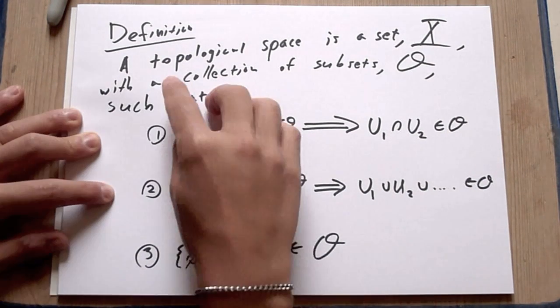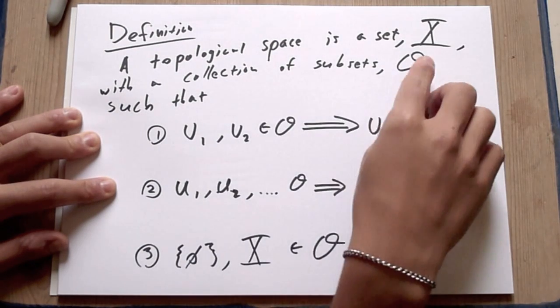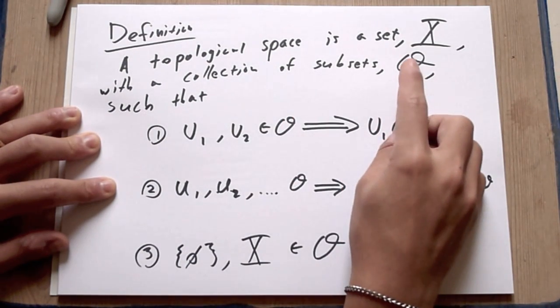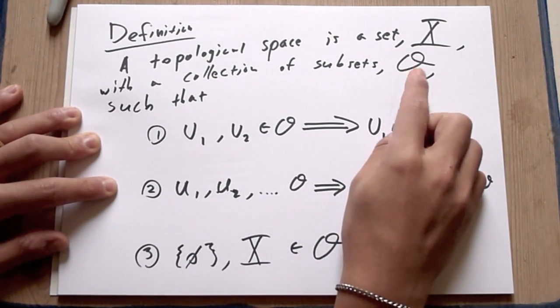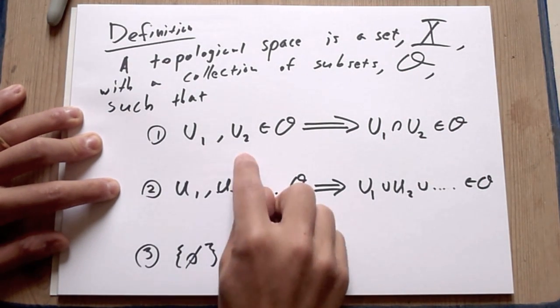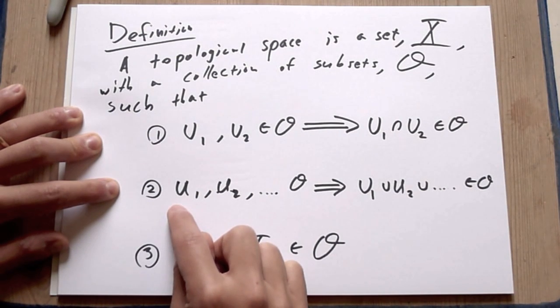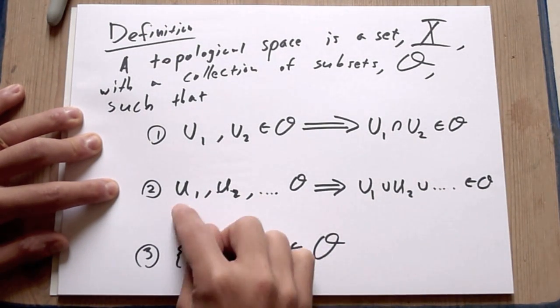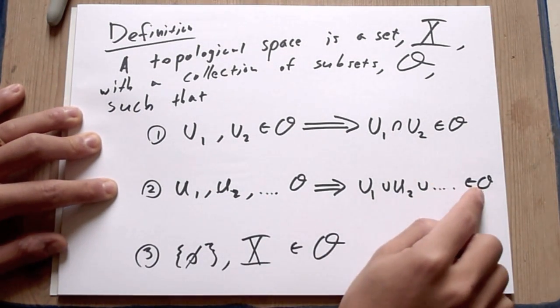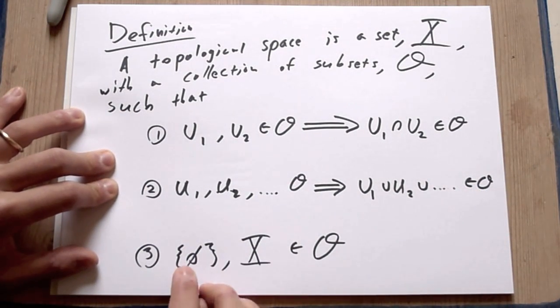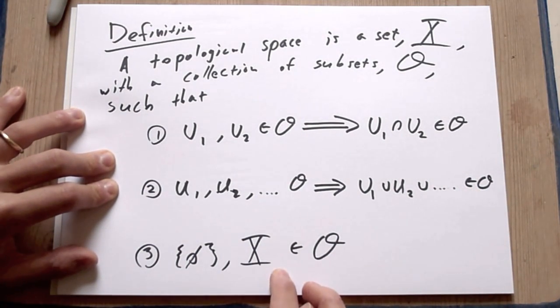Let's just review the definition. A topological space is a set X with a collection of subsets O. We call them open sets, and if you intersect two open sets, you get another open set. If you take the infinite union of an infinite collection of open sets, you get another open set. And the empty set and the entire space are both open sets.